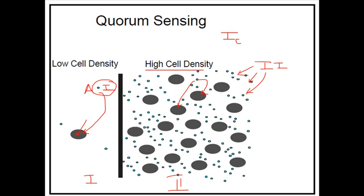Bacteria do the same. If the bacteria secret is inducing molecules and those molecules generate illumination, they know they are surrounded by companions. This is the basic of quorum sensing — checking whether they are alone or many. The practical application is that pathogenic bacteria wanting to invade a host and produce virulence need to check whether they are present in large enough numbers. Virulence can only be produced when they are present in a huge amount, not in a very small amount.